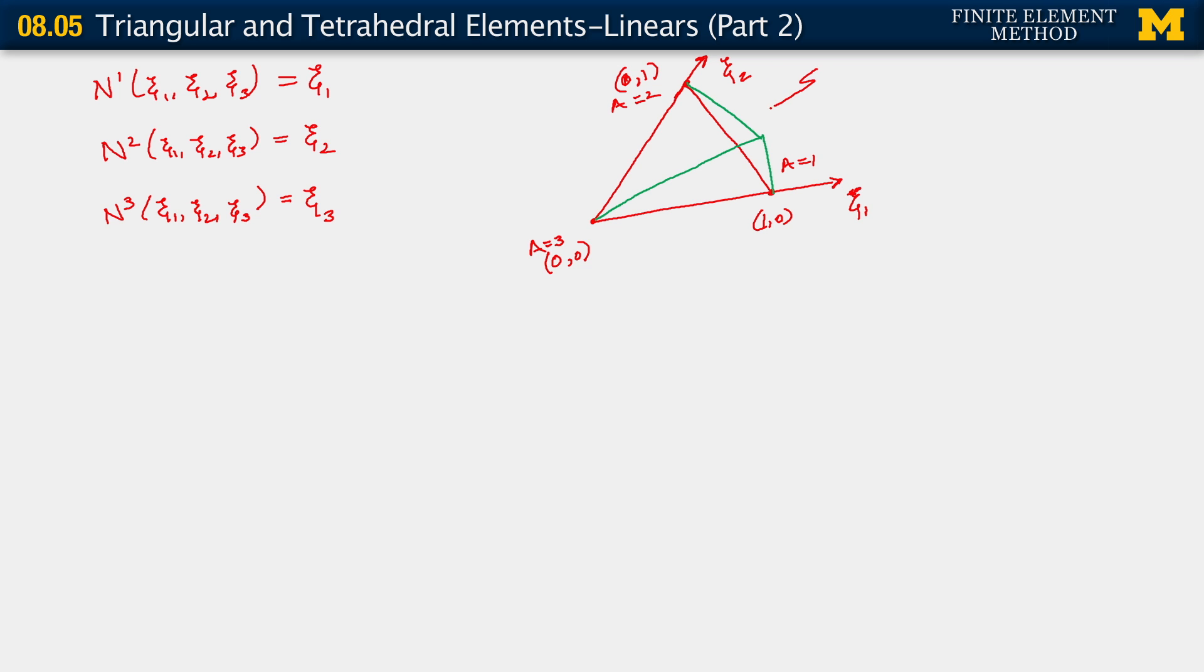It slopes down linearly from 1 to 0. That is c1, and likewise we can construct c2 and c3.